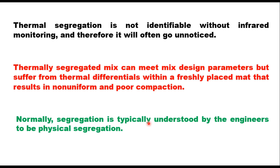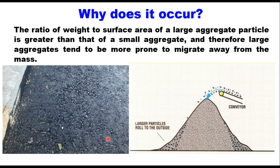Normally segregation is typically understood by engineers to be physical segregation, and therefore today our focus is on physical segregation only. Why does segregation occur? The ratio of weight to surface area of a large aggregate particle is greater than that of a small aggregate, and therefore large aggregates tend to be more prone to migrate away from the mass. This migration of aggregate is typically the result of gravitational forces while the aggregate is in motion. Physical segregation occurs when aggregates are being stockpiled and the larger aggregates tumble down the outside of the pile, leaving the smaller aggregates behind.